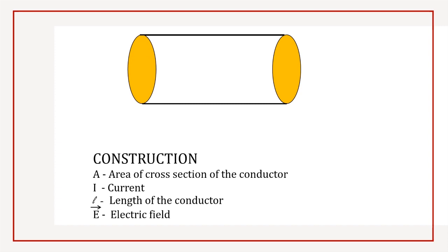Consider the length of the conductor to be L and A is the area of cross-section of the wire. When a potential difference V is applied across the wire, a net electric field E is created in the wire.